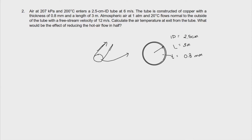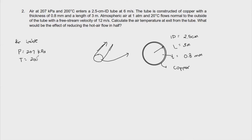This pipe is made up of copper. Inside the pipe, we have air with a pressure of 207 kilopascal and a temperature of 200 degrees Celsius. The velocity of the fluid entering is 6 meters per second — so the air inside the tube is flowing at 6 meters per second. The tube material is copper.